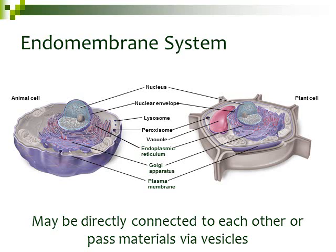These organelles may be directly connected to each other — they could be continuous — or they're part of the endomembrane system because they can pass materials from one part to the other using vesicles.